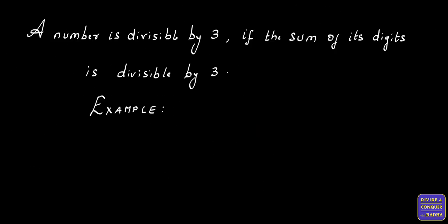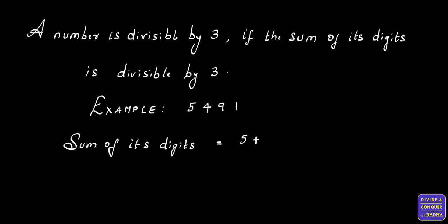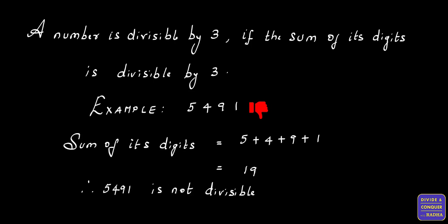Let's check another example, 5,491. The sum of its digits is equal to 5 plus 4 plus 9 plus 1, which is equal to 19. 19 is not divisible by 3, so the above rule is not satisfied. Therefore, the number 5,491 is not divisible by 3.